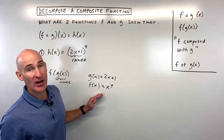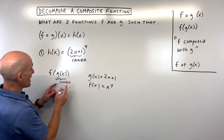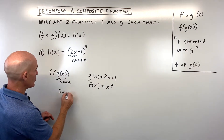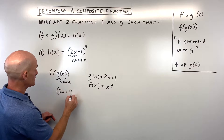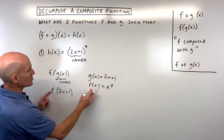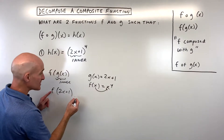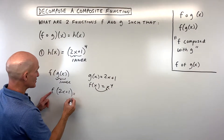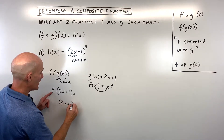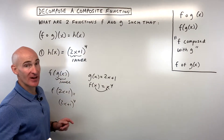You can always check your work by doing the composition of functions. Say g of x equals 2x plus 1, then go to your f function — whatever's in the parentheses goes in place of x. So that's going to equal 2x plus 1, all raised to the fourth power, and we're getting back our h of x function.